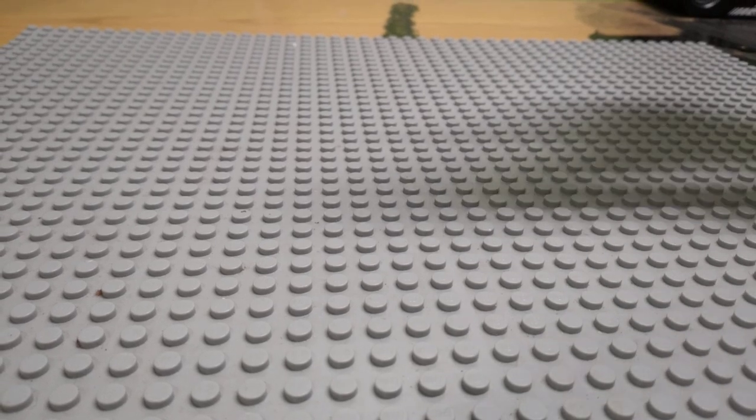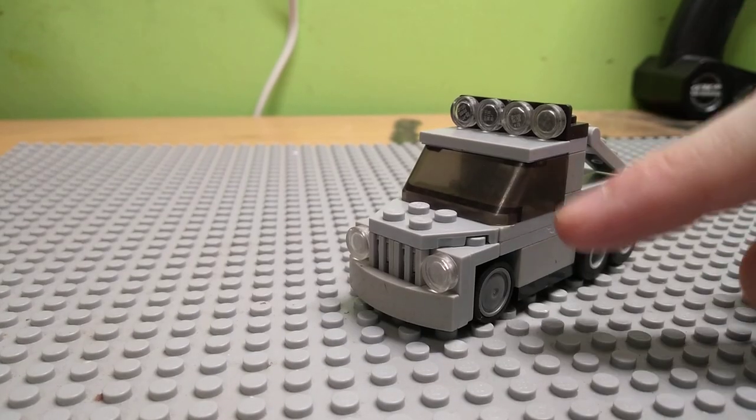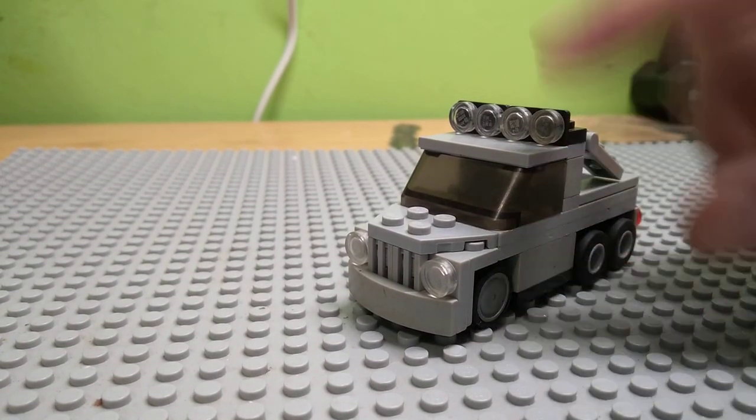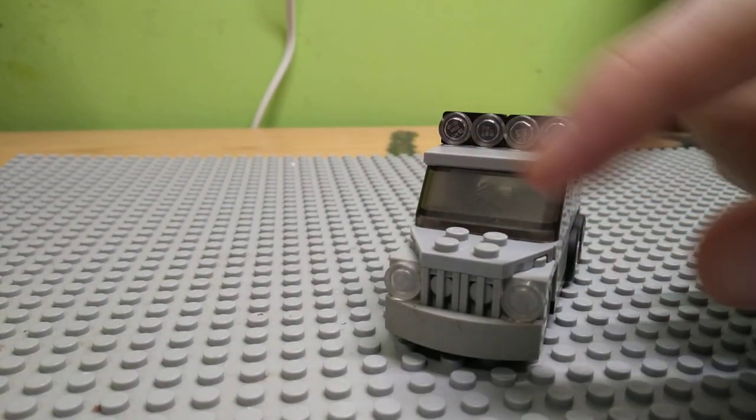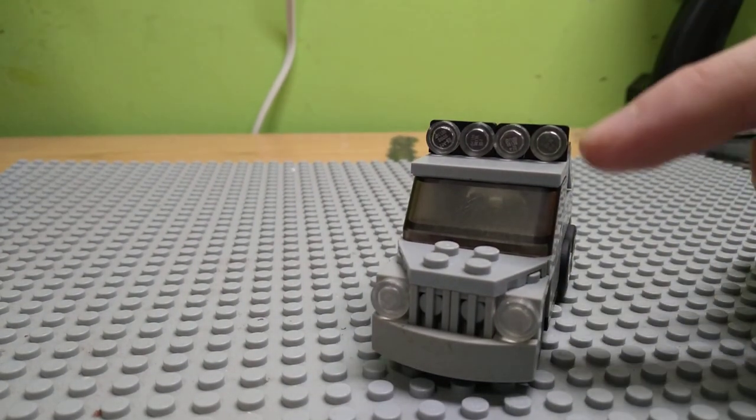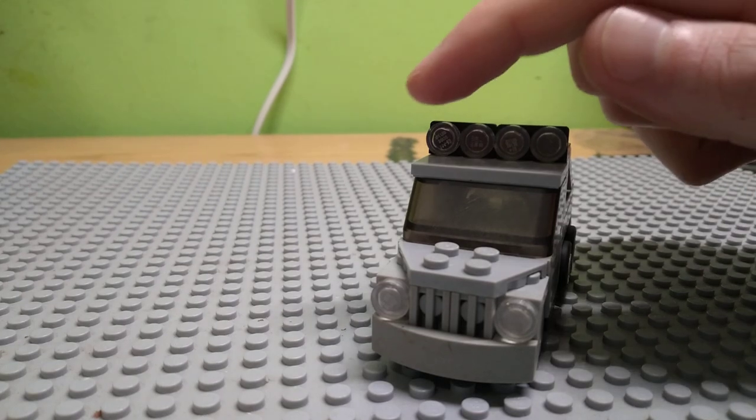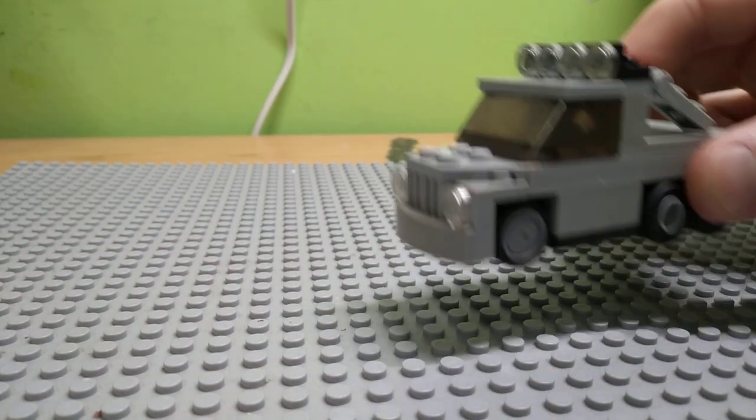Alright, so here it is guys. You can see it has the classic Jeep grille on the front, the two circle headlights. Up top we got a nice little light rack with four giant lights up there on the top.